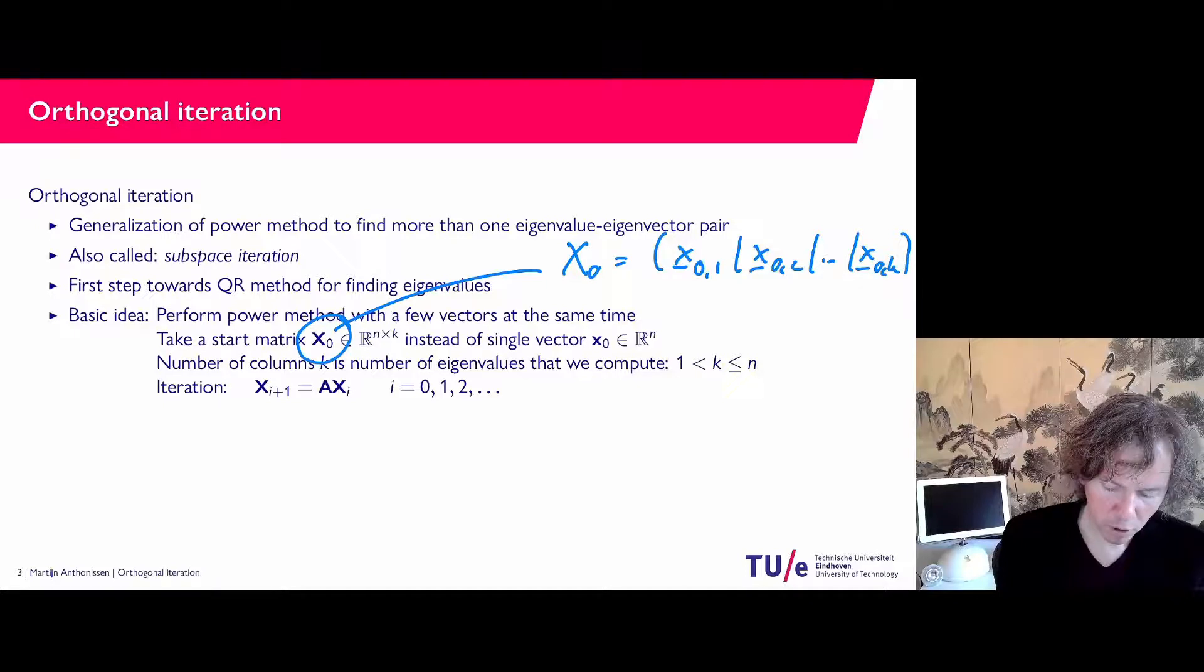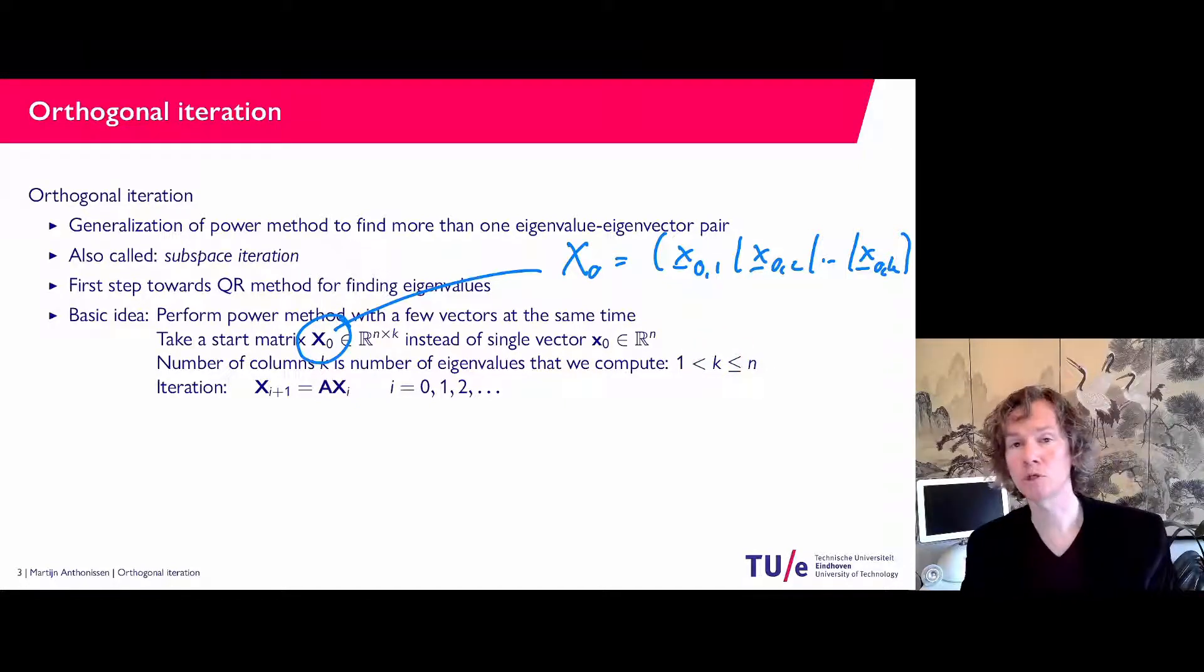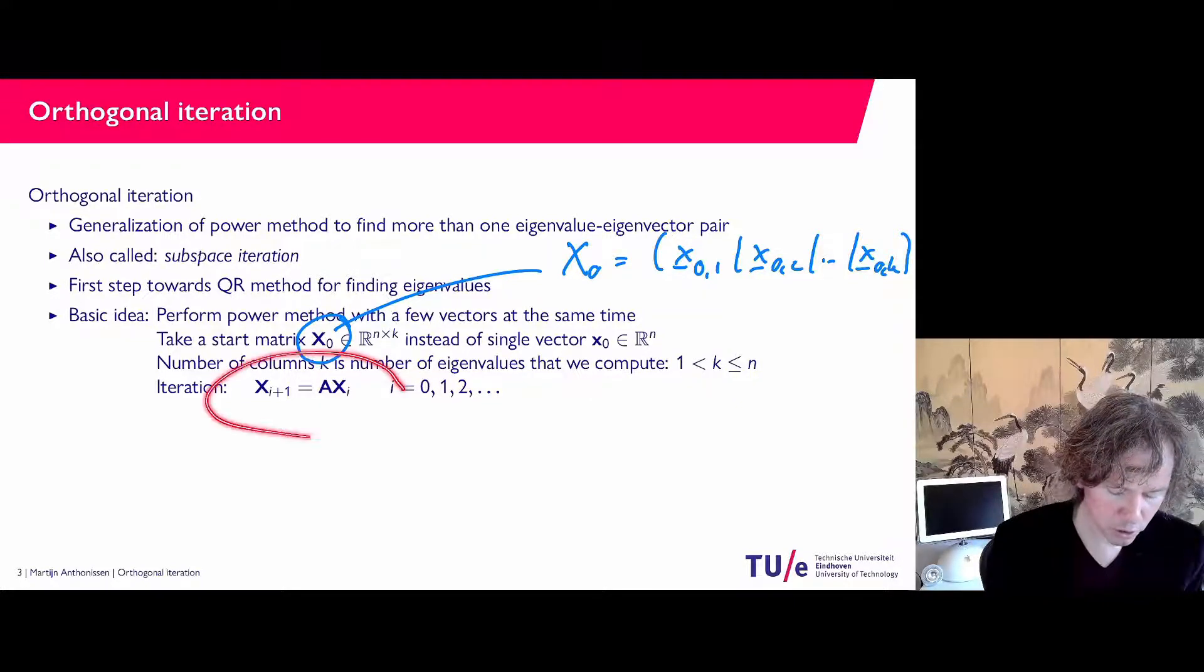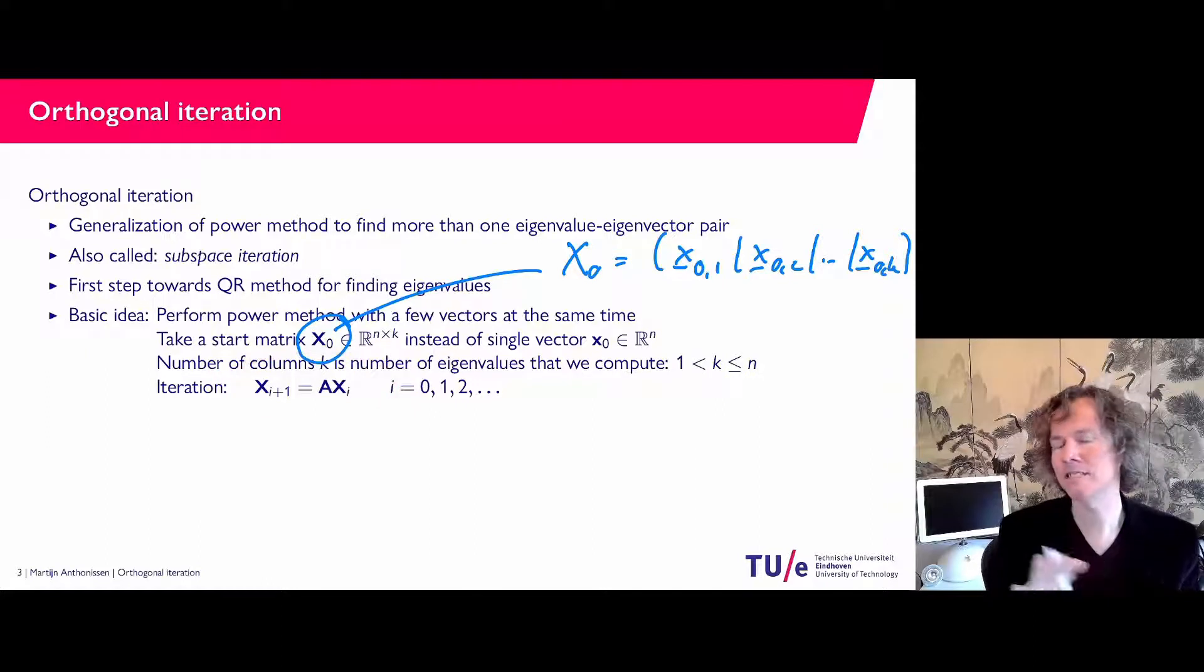So the number of columns here that's k and that's the number of eigenvectors that we want to compute. It should be bigger than one, otherwise we have the standard power method. And maybe it's equal to n which means that we are going to compute all of the eigenvalues. This is the basic idea that we want to compute k eigenvalues at the same time.